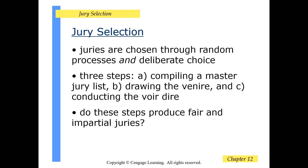Juries are chosen through random processes and deliberate choice. There are generally three steps to jury selection: compiling a master jury list, drawing the venire, and conducting the trial. Do these steps produce fair and impartial juries? Well, that's hard to say.